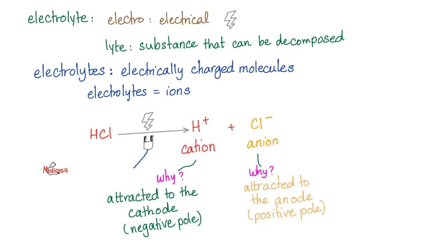What the flip is an electrolyte? Electro means electrical. Lyte means a substance that can be decomposed. Look at this beautiful hydrochloric acid. Put it in water. It's going to dissociate. It's going to decompose into positive protons and negative chloride. This is the cation and this is the anion. Why is a cation positive? Because it's attracted to the negative pole, aka the cathode. And that's why we call it the cation, because cathode. How about the anion? It's the negative, because it's attracted to the positive pole or the anode. Anion, anode.